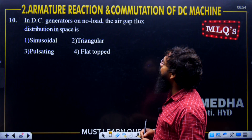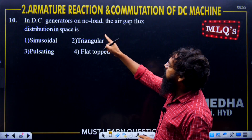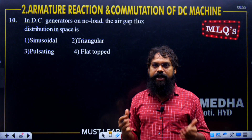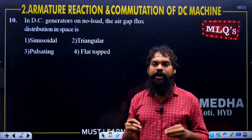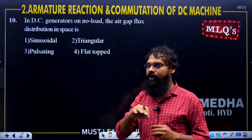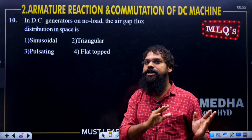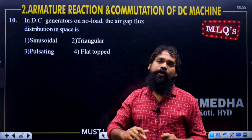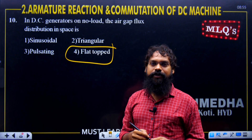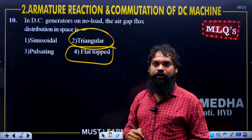In a DC generator on no load, the air gap flux distribution in space: on no load, the load is not connected, so there is no armature flux. Because of no armature reaction effect, the main field flux shape is not disturbed. The main field MMF shape is a flat top. The armature MMF is triangular, and the resultant is disrupted — but here we are on no load.